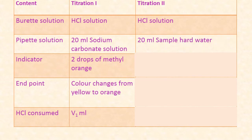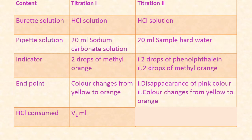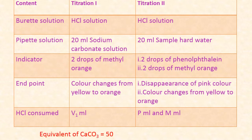For titration two, the alkalinity of the sample water is to be estimated. We use two indicators: two drops of phenolphthalein and two drops of methyl orange. For phenolphthalein, the endpoint is disappearance of pink color. For methyl orange, the endpoint is color change from yellow to orange. Record these values as P ml and M ml respectively, where P stands for phenolphthalein and M stands for methyl orange.